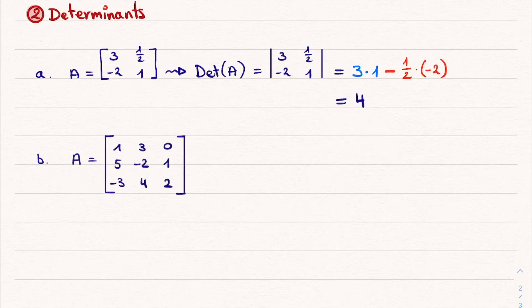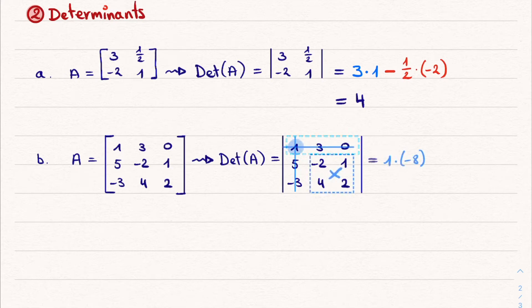For a 3 by 3 determinant, again the same procedure applies, but you need to keep up your focus. We start by picking a row, and let's take the first one because it has a 0. Now we can start, isolate the first element, scrap its row and column, and multiply it with the remaining determinant.